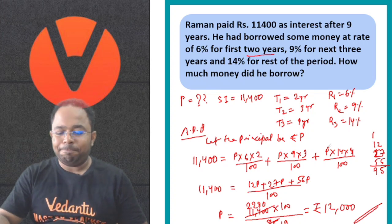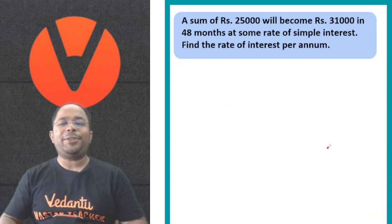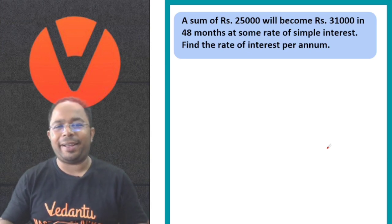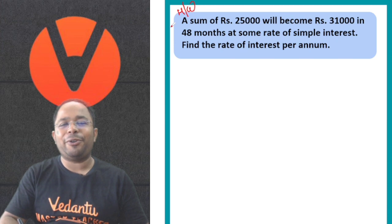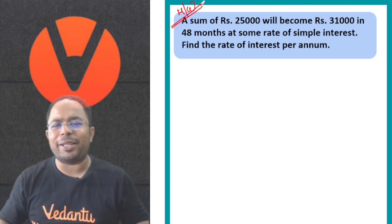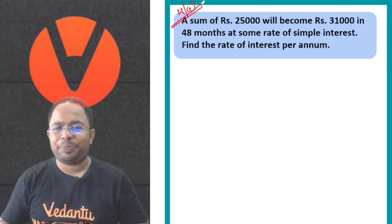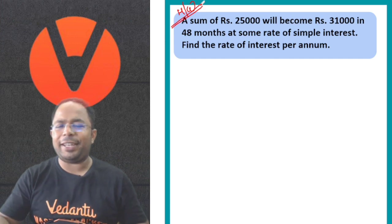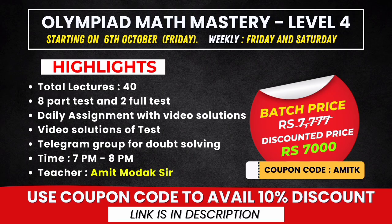All right, chala then students. The next question on screen is your homework question. Write in the chat box — what is the rate of interest for this question? And a very fantastic new update: OMM Level 4 is going to start from 6th October. I will be taking those classes for grade 5 and 6. And for upper grades, separate OMM courses are also running. Olympiad Mastery Level courses.